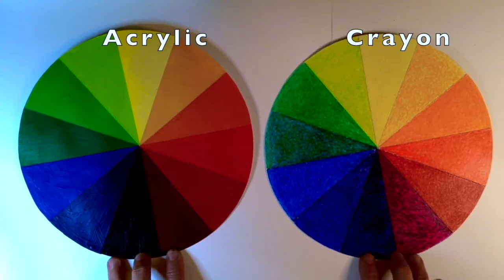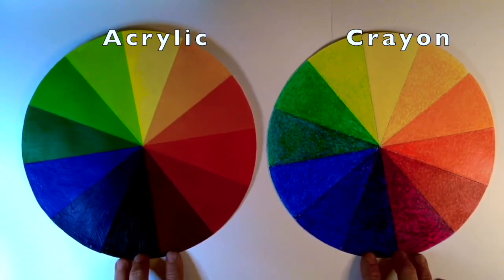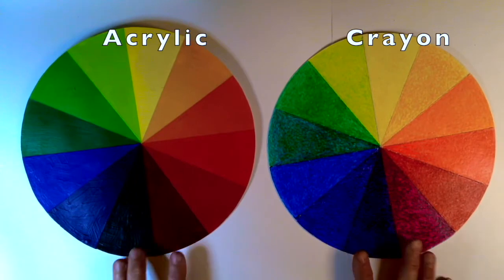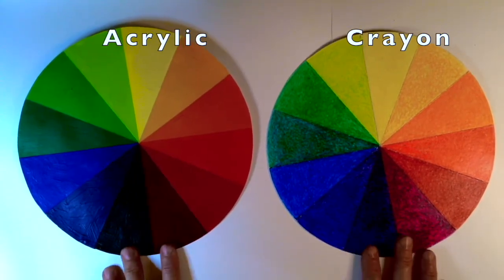The difference is with acrylic there's considerably more resources and expense and time and mess that go into creating a color wheel with acrylic versus a color wheel with crayon which is pretty inexpensive.